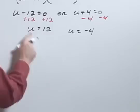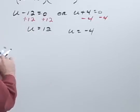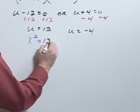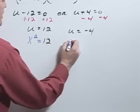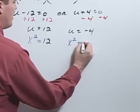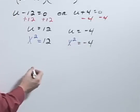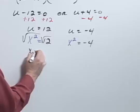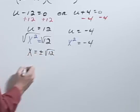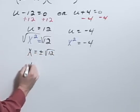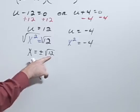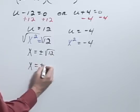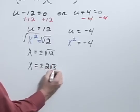But remember that this u is really x squared. So we really have x squared equals 12. To get rid of the squared then, I can square root both sides. So x would equal positive negative square root of 12, which reduces to x equals positive negative, remember, 12 would be 4 times 3. The square root of 4 is 2. So this would be positive negative 2 times the square root of 3.